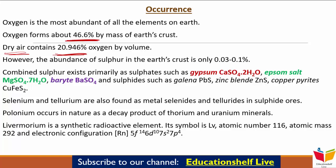लेकिन जो Sulfur का abundance है हमारी Earth Crust में, वो बहुत कम है — सिर्फ 0.03 से 0.1%। Combined Sulfur primarily Sulfates और Sulfides की form में exist करता है। Sulfates जैसे Gypsum (CaSO₄·2H₂O), Epsom Salt (MgSO₄·7H₂O), और Barite (BaSO₄)। Sulfides जैसे Galena (PbS), Zinc Blende (ZnS), और Copper Pyrites (CuFeS₂)।